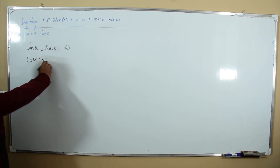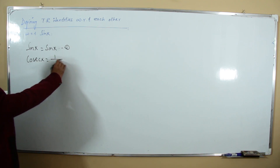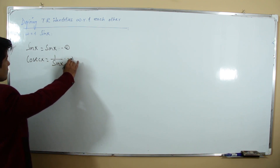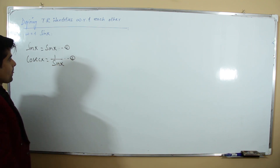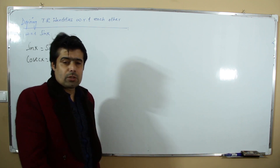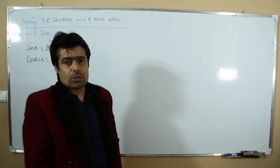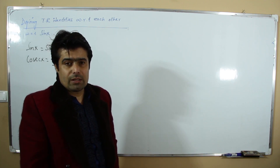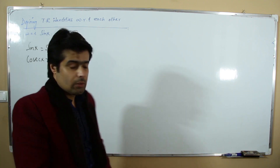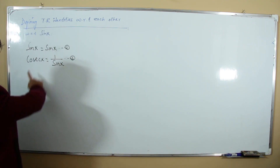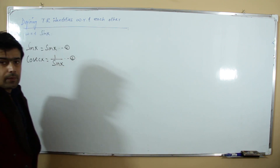The ratio related to sine is cosecant. So cosecant with respect to sine is 1/sin. This is our second relation.